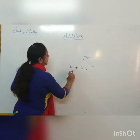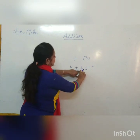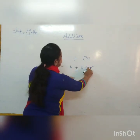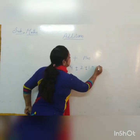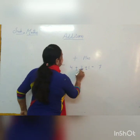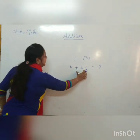Just as an example: 4 plus 2 plus 1 equals. We will add 4 plus 2 equals 6, then 6 plus 1 equals 7. So it indicates the addition.